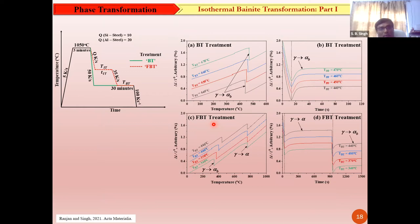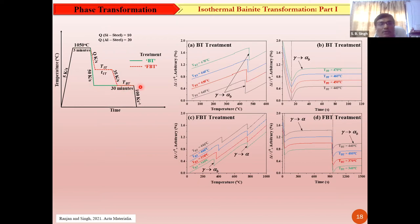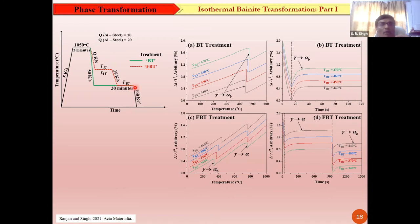Moving on to isothermal transformation of bainite: analysis gives some interesting insight. We started with two steels, austenitized and austempered directly in the bainite transformation region. In another set of experiments, before austempering, we treated the material to obtain about 50% ferrite in the intercritical region. The red dashed line represents bainite forming from austenite with about double the original carbon content (~0.4 wt%), whereas the green line represents direct austempering where bainite forms from austenite containing about 0.2% carbon.